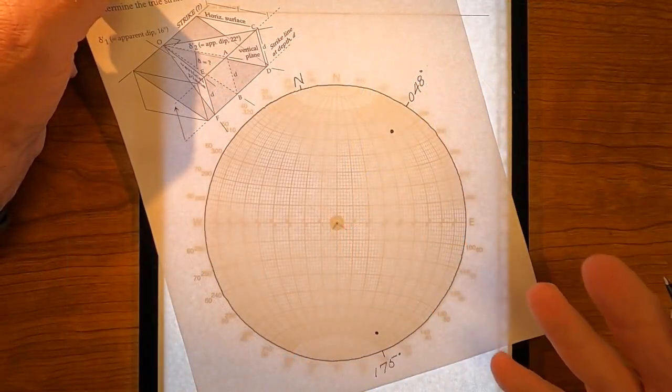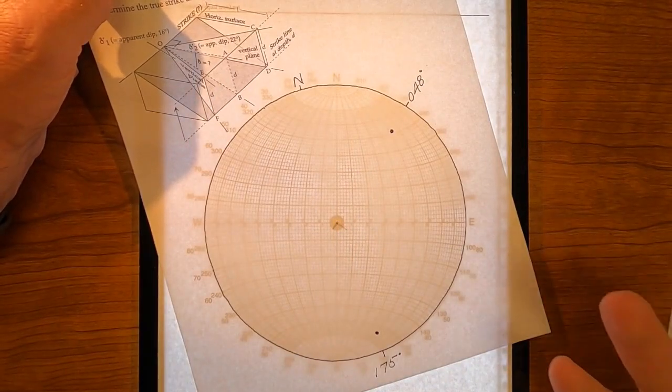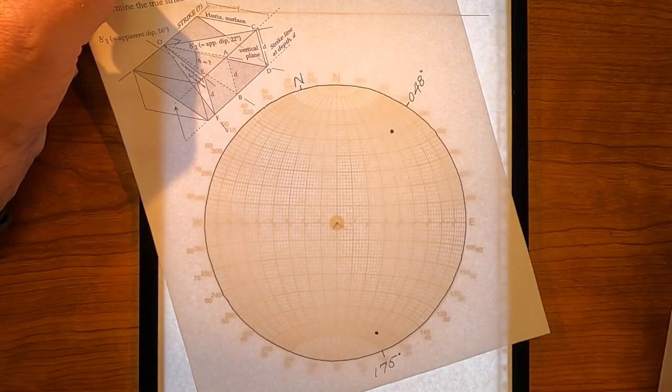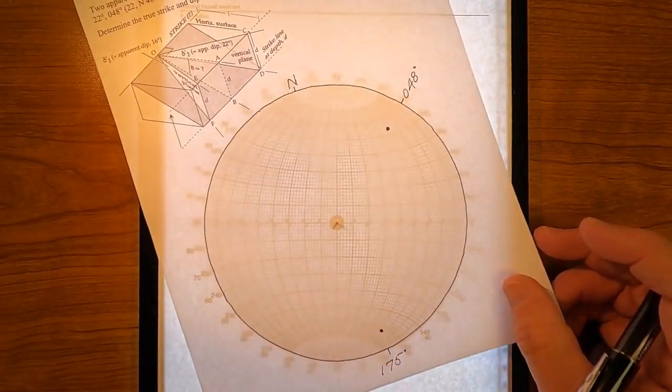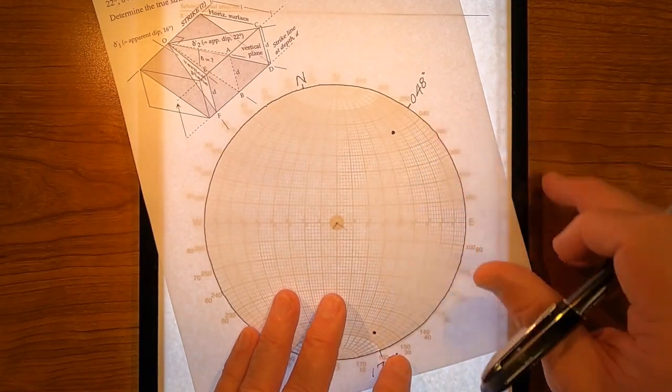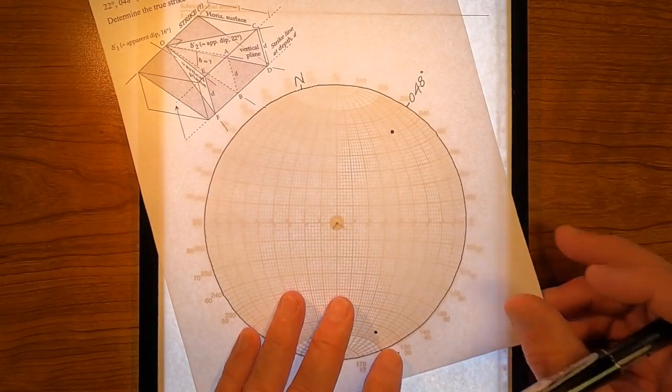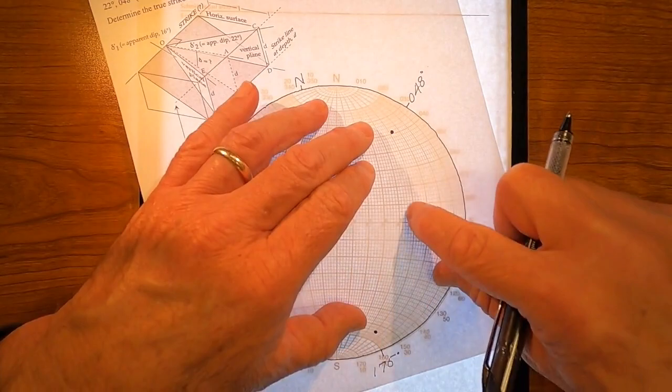We have their orientations marked. Now, it's simply a matter of fitting a plane to those two lines. And that plane is going to be, all I'm going to do here is find the great circle.